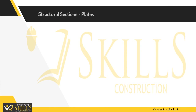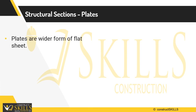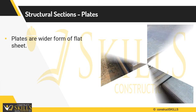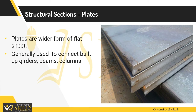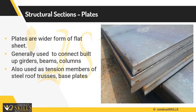Structural section plates are manufactured from high quality base material. They are available with thickness of 5 mm to 50 mm, width of 1.5 to 3 meters, and length of 6 to 12 meters. They are generally used to connect built-up girders, beams, and columns, and also used as tension members of steel roof trusses and base plates.